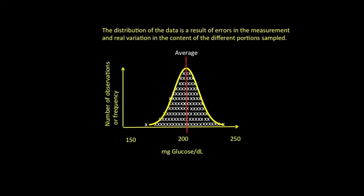The more reproducible the data, the skinnier the curve. The wider the curve, the less certainty that we have in a given measurement of its being close to the true value.